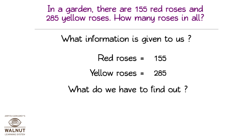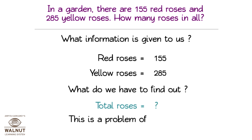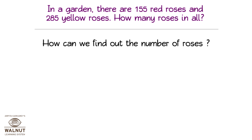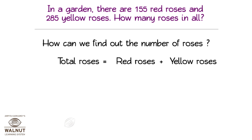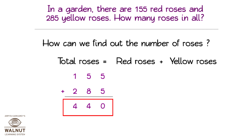What do we have to find out? The total number of roses. This is a problem of addition. Total roses is equal to red roses plus yellow roses — that is 155 plus 285. So there are 440 roses.